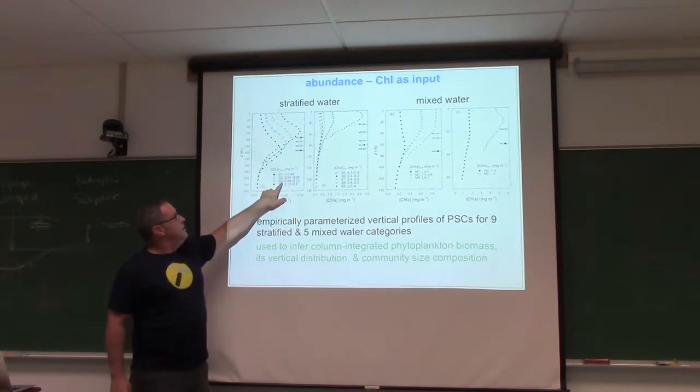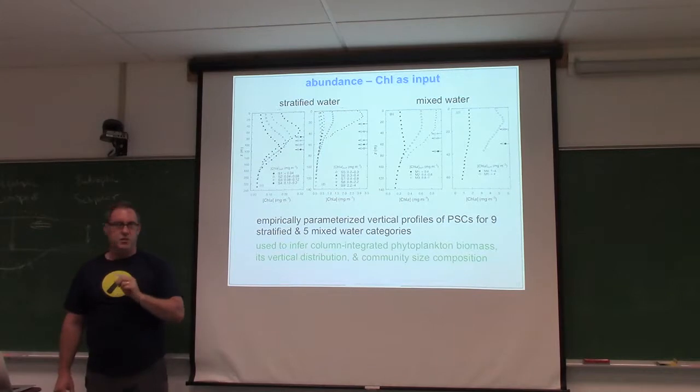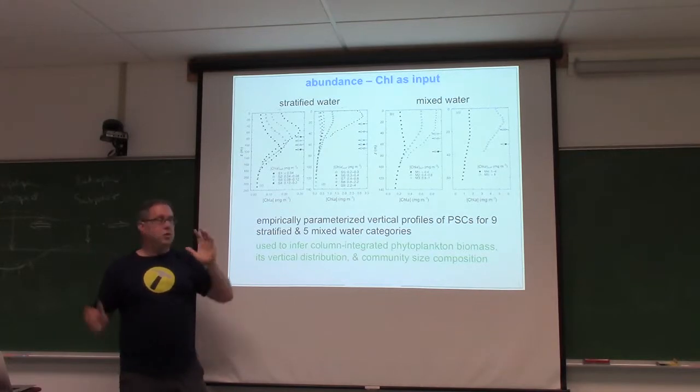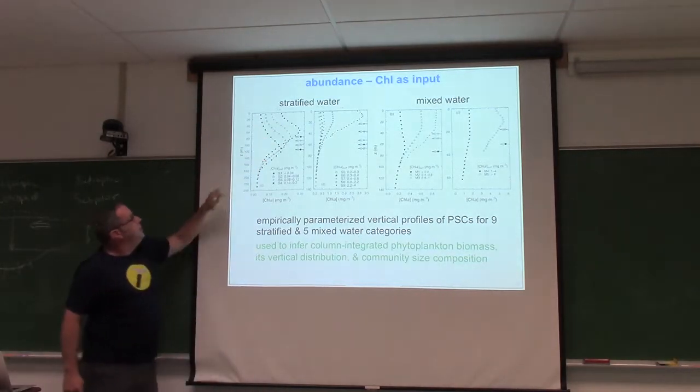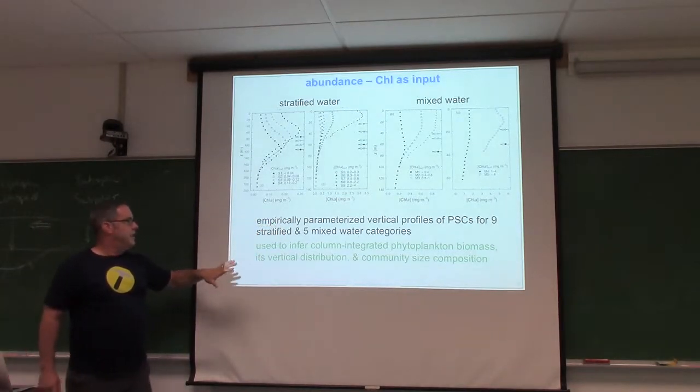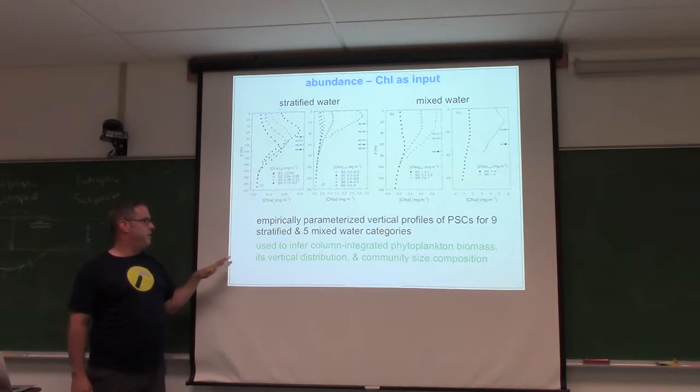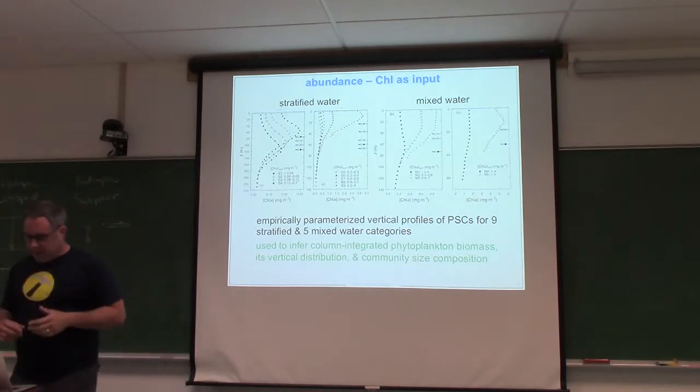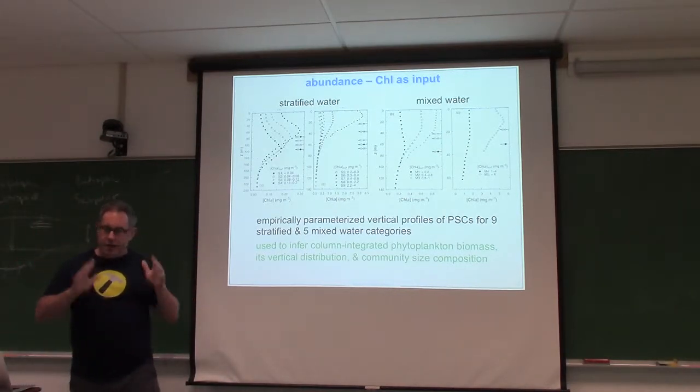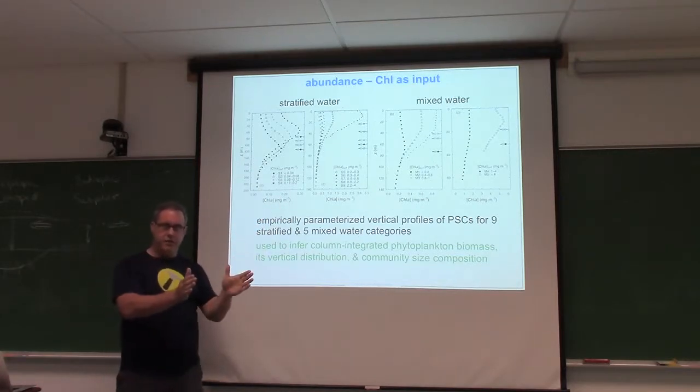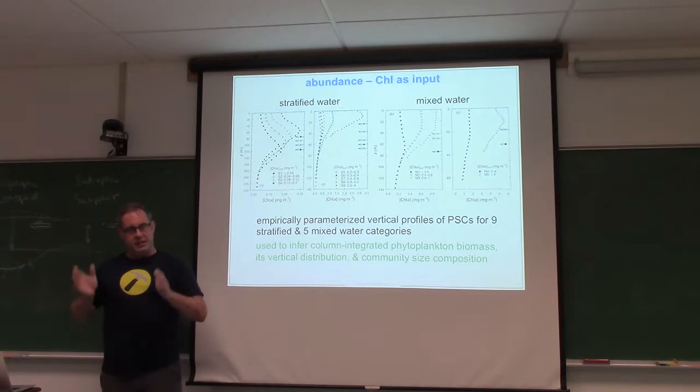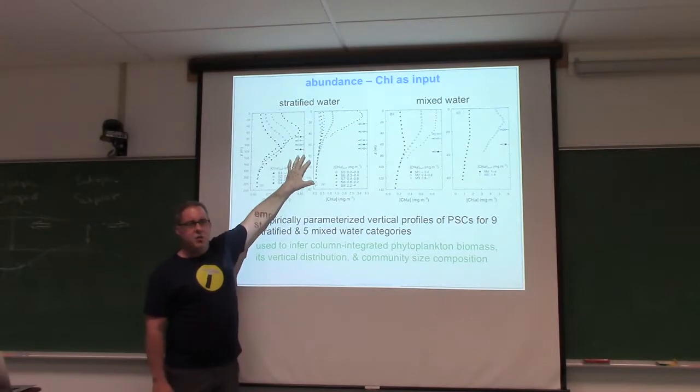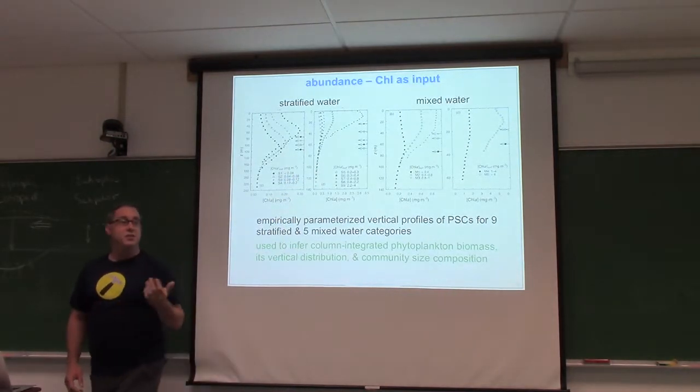These vertical profiles are assigned to each of these classes and trophies. So if I have S3, well then I take a guess that my typical vertical profile looks something like all of the crosses here. They empirically parameterized all of this and it's used to infer column integrated phytoplankton biomass vertical distribution and community size composition. Rather than something like Taka's work, which is just I know chlorophyll, I know a fraction here, they're going in a different direction and saying I know chlorophyll, I have a guess at what the vertical distribution looks like, and if I know that I can use some other ancillary information to get to productivity from that.